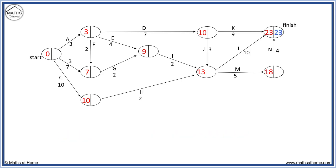Now we do the backward scan by entering this minimum completion time of 23 minutes in the right side of the final node. In the backward scan, we subtract the numbers on each edge and write the smallest number in each node. 23 minus 4 equals 19. To get to this node, we have 23 minus 10 equals 13. 19 minus 5 equals 14, but this must be written on the outside by task M, because only the smaller number gets to go in the node.